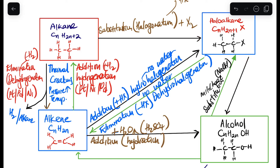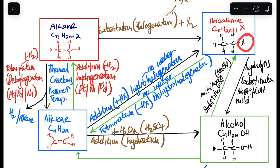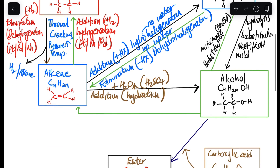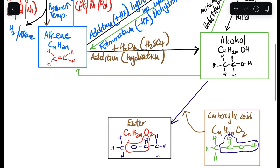The opposite — from a haloalkane to an alcohol — is called hydrolysis. Hydrolysis is also a substitution reaction. We use sodium hydroxide or potassium hydroxide with mild heat, and we are substituting the halogen with an OH group.